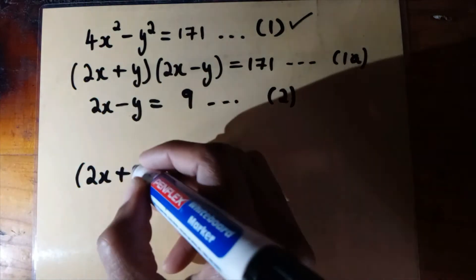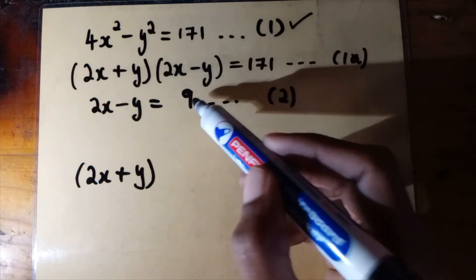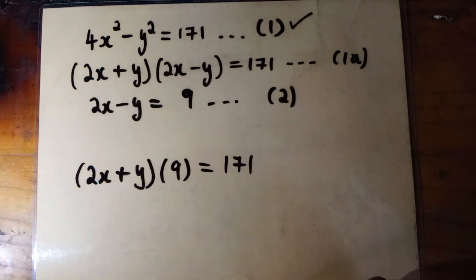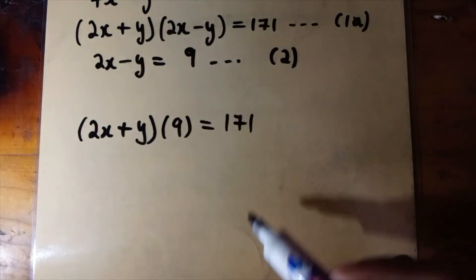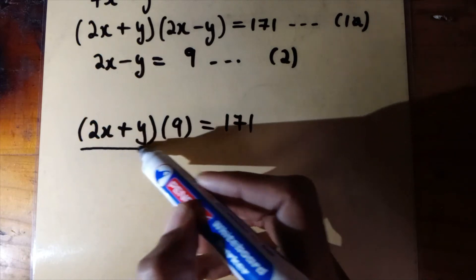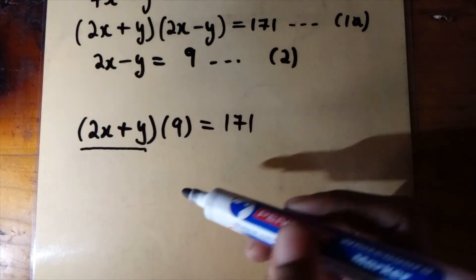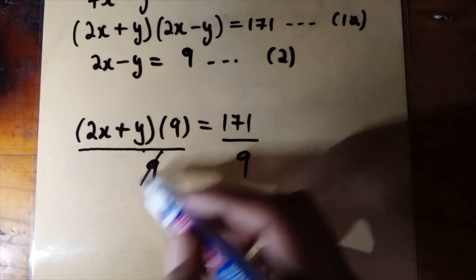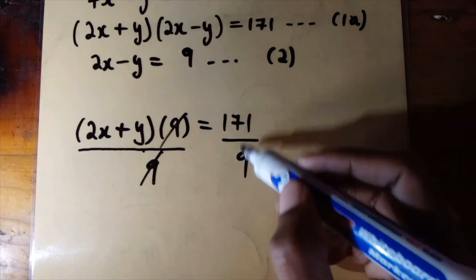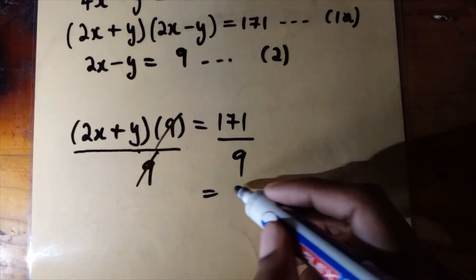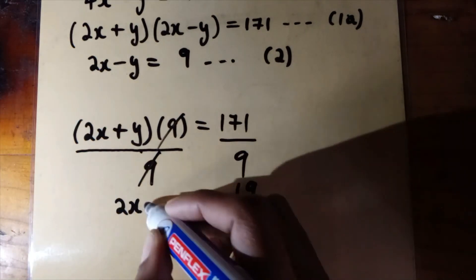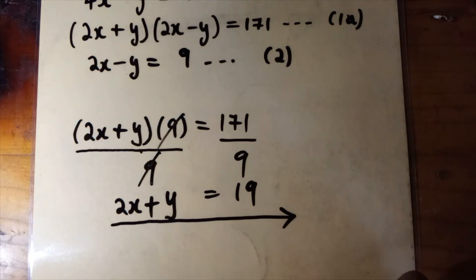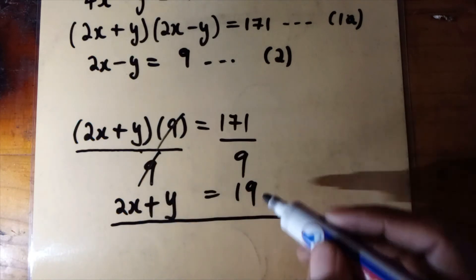We replace 2x minus y in equation 1a with 9, giving us (2x + y) times 9 equals 171. We are solving for 2x plus y, so we divide both sides by 9. The 9 cancels on the left, and 171 divided by 9 equals 19. So 2x plus y equals 19.